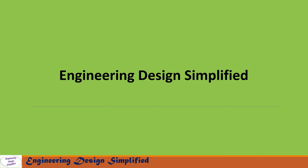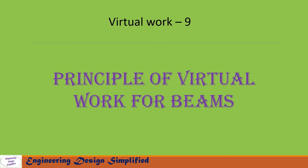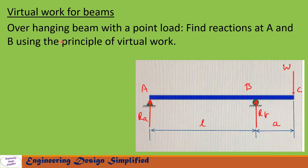Hello engineers, welcome back to Engineering Design Simplified. In this video series I will discuss the principle of virtual work applied for beams. Today's problem is an overhanging beam with a point load. The beam length from A to B is L and from B to C is A. There is a point load W acting vertically downwards at point C. We need to find reaction at A (Ra) and reaction at B (Rb) using the principle of virtual work.